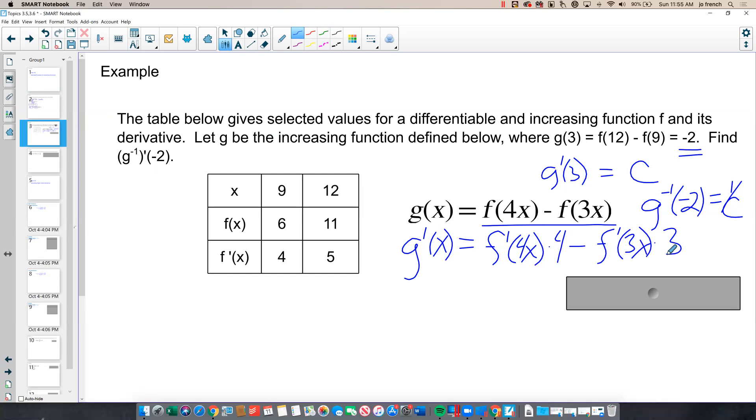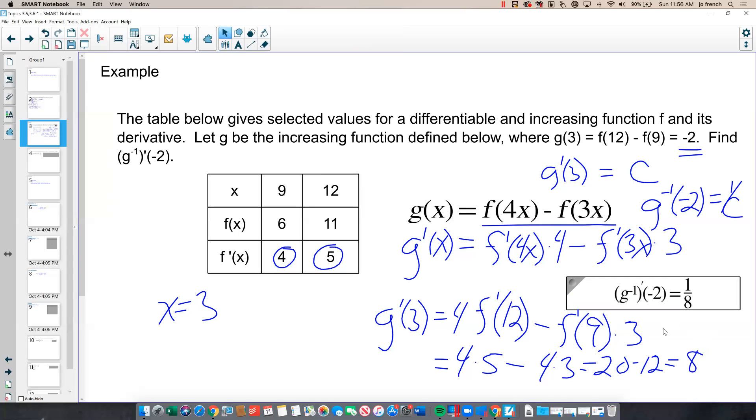If x equals 3 for g, well then I'm looking for g prime of 3 is going to be 4 times f prime of 4 times 3, or 12, minus f prime of 3 times 3, or 9 times 3. Well, from the table, f prime of 12 is 5, so this would be 4 times 5, minus f prime of 9, which is 4, times 3. So that gives me 20 minus 12, or 8.